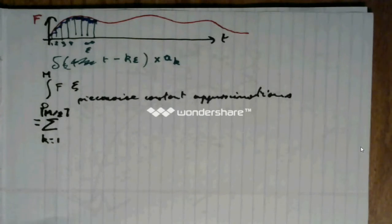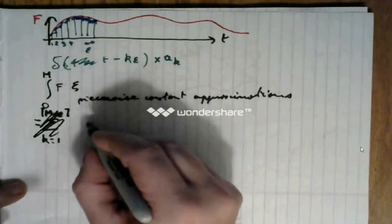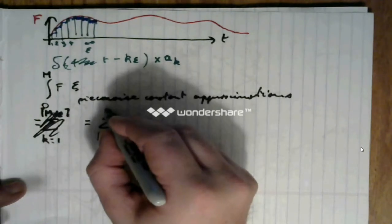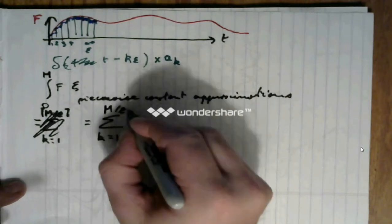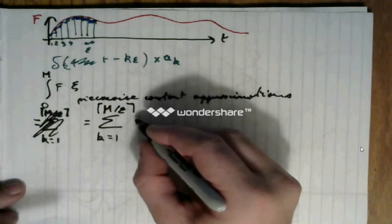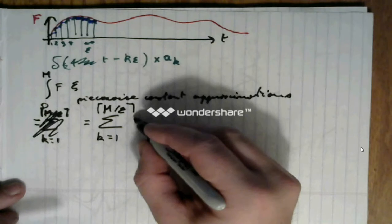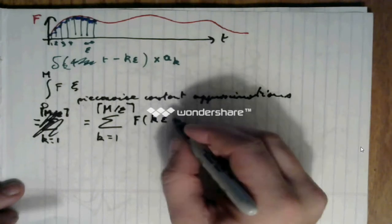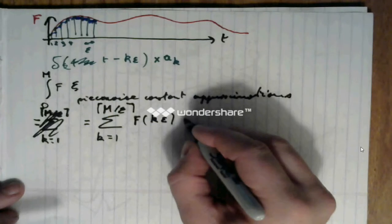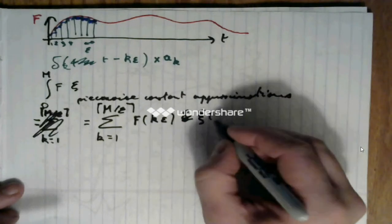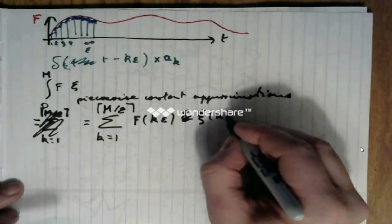Then, we can rewrite that this integral will be equal to the sum from k equals 1 to m divided by epsilon. And we're going to take the nearest integer of f of k times epsilon, xi of k times epsilon.